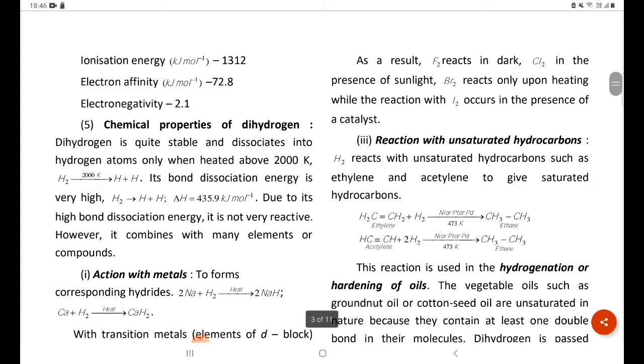Chemical properties of dihydrogen: dihydrogen is quite stable and dissociates into hydrogen atoms only when heated above 2000 K. H2 at 2000 K breaks down into H plus H.